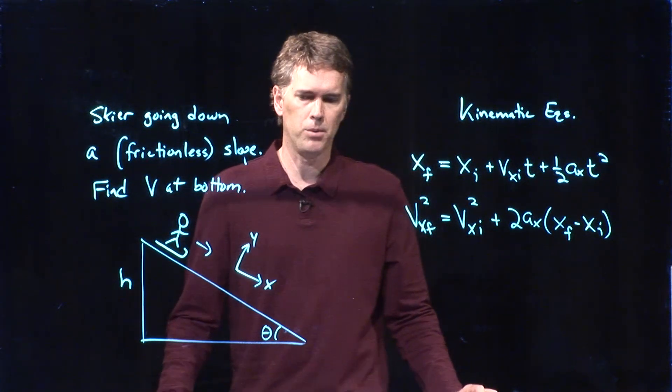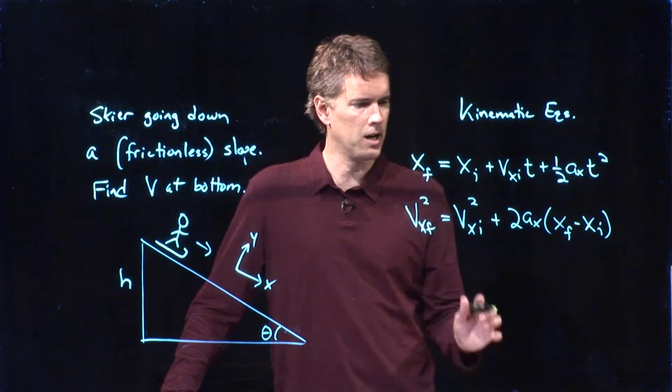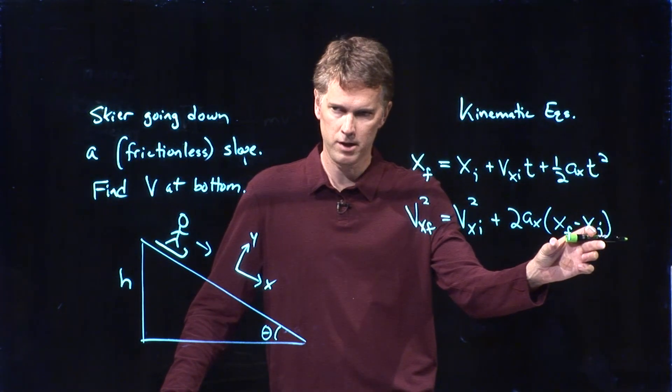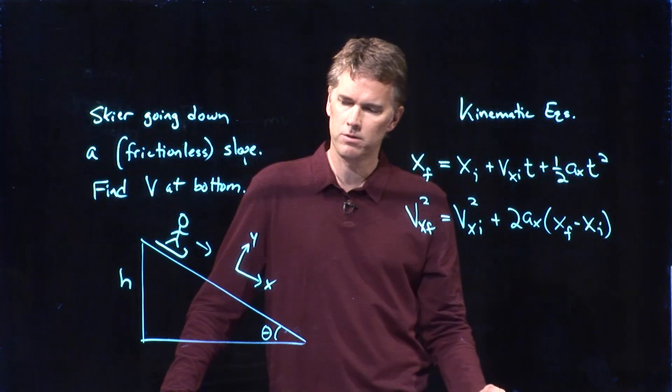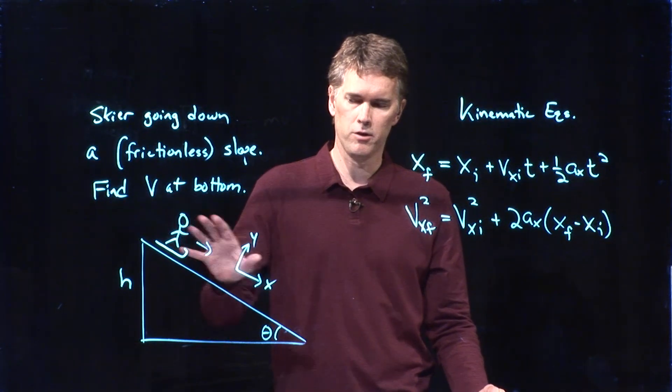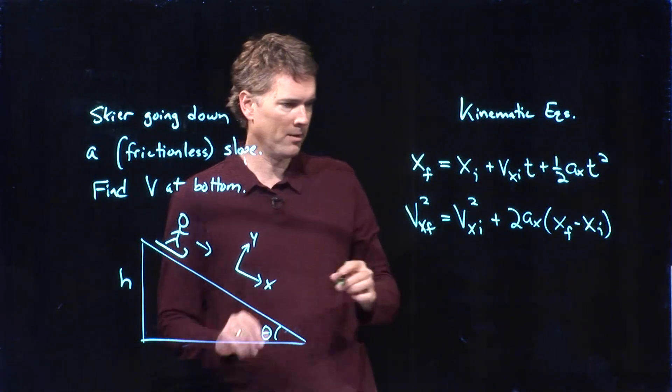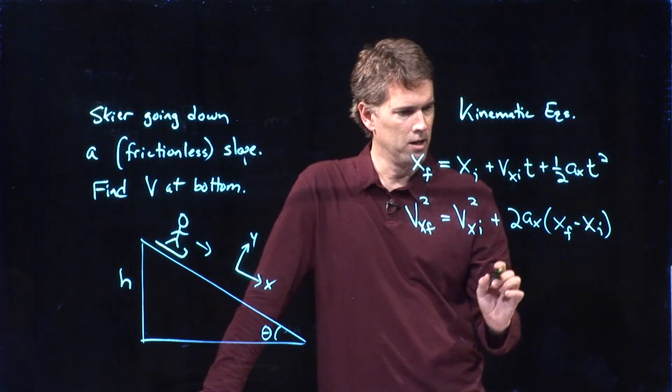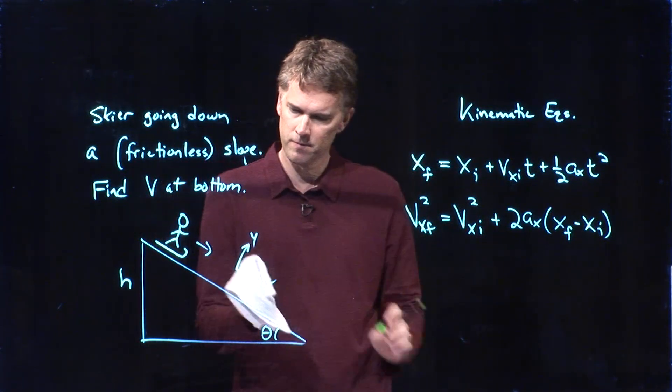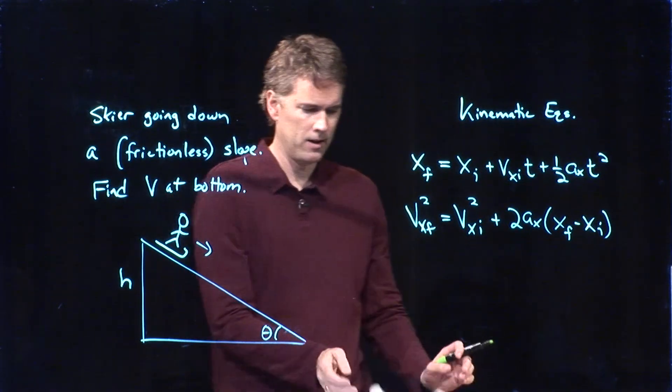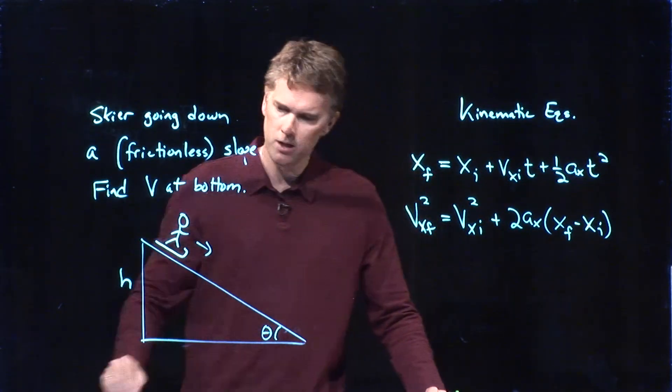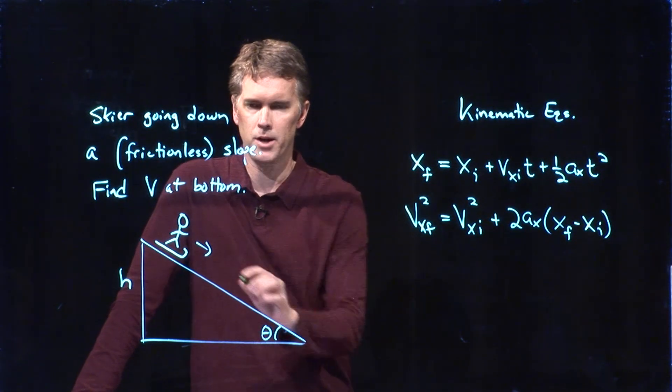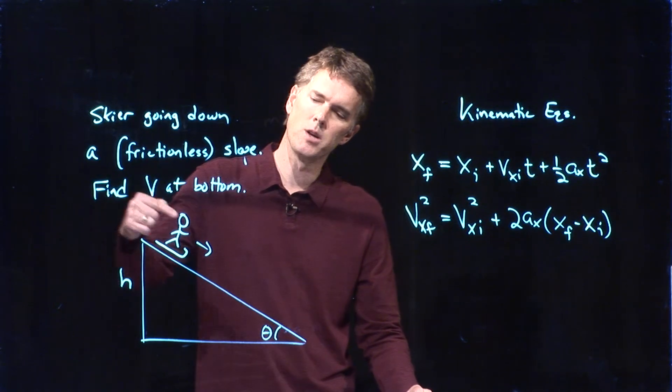That one looks like it might help us because if you're starting from rest, we know v x initial. If we know how far you go, we know this. a sub x, we might remember what that is for a slope. Can you hand the mic to Kevin? Let me have a chat with Kevin real quick. So if I'm on a slope like this, and I'm thinking about my acceleration in this direction, do you happen to remember what I should put here? What is my acceleration down the slope?